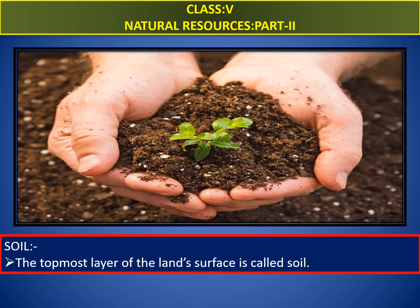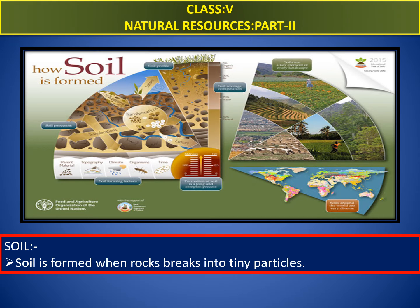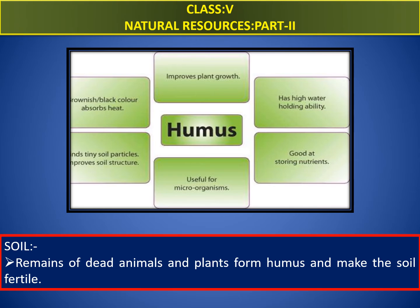Let us learn about soil. The topmost layer of the land surface is called soil. This is the thin layer of material covering the earth's surface. Soil is formed by breaking down of rocks at or near the surface of the earth through various physical, chemical, and biological processes by various factors such as the sun, water, wind, and living organisms. This causes the rocks to expand during the daytime and cool down and contract at night.